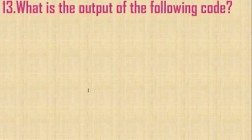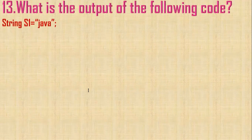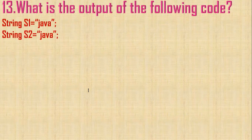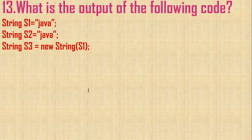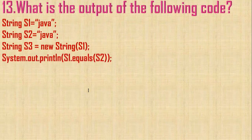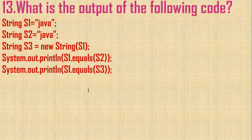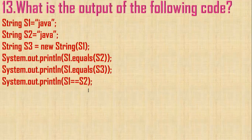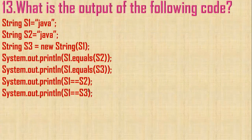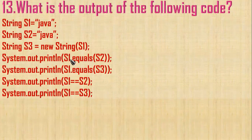Let us go to the next question. What is the output of the following code? S1 is given as 'Java'. S2 is also given as 'Java'. String s3 is equal to new String of s1 — here we can see an object is created. We print s1 equals s2 and then s1 equals s3, using the equals relational operator. Since both s1 and s2 have the same value, the output will be boolean true. Both are same, so it will be true.